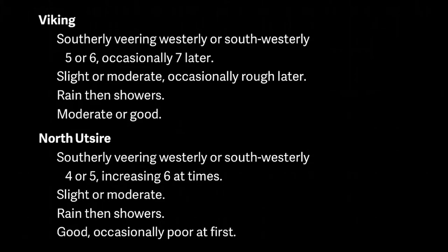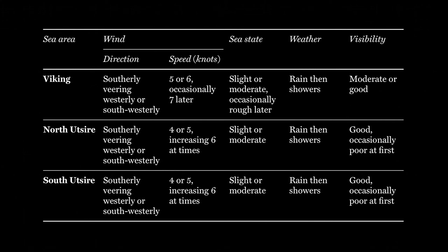We could format the list more heavily — this is better — but what we need is a presentation that gives us access to the sea area we're interested in and puts back those unheard data labels. Here's the same forecast presented as a table: Viking, southerly veering westerly or southwesterly, five or six occasionally seven later, slight or moderate occasionally rough later, rain then showers, moderate or good. The table demonstrates two of the advantages of visual language over spoken language.